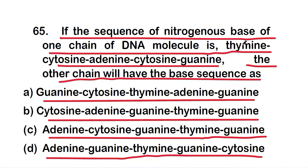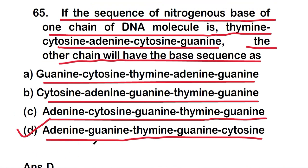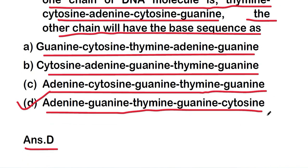...or option D, adenine, guanine, thymine, guanine, cytosine. The first nucleotide is thymine, so its complementary is adenine — this points to option C or D. The next base is cytosine, whose complementary is guanine, confirming option D. So the complementary base sequence is adenine, guanine, thymine, guanine, cytosine.